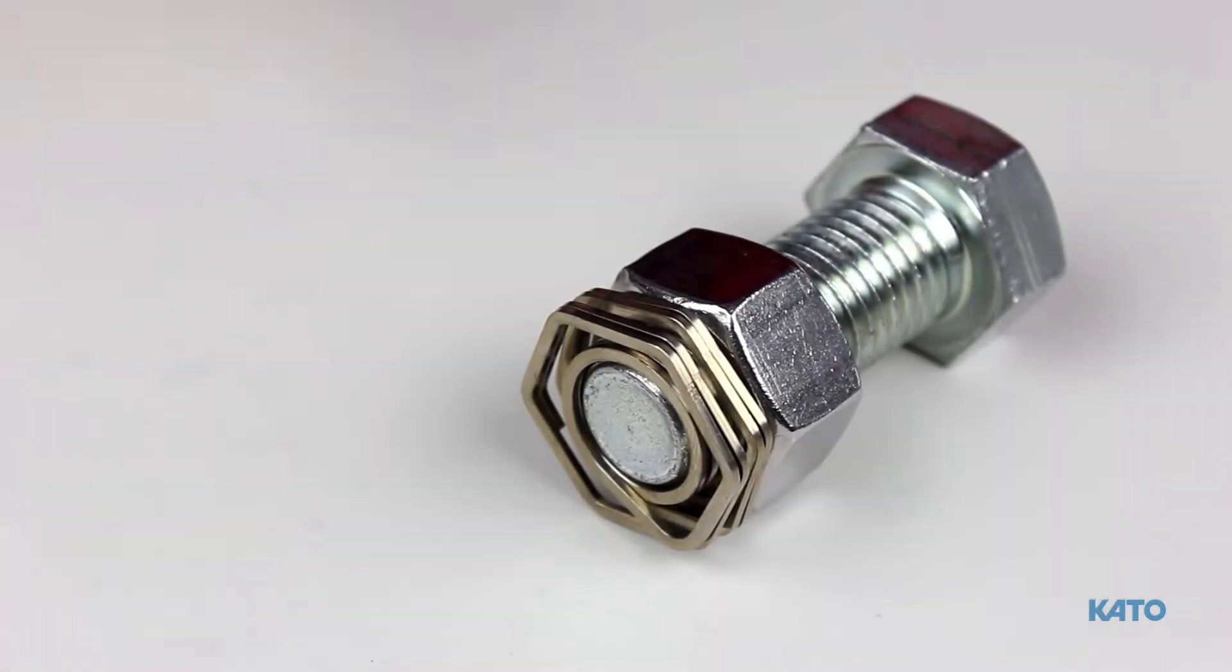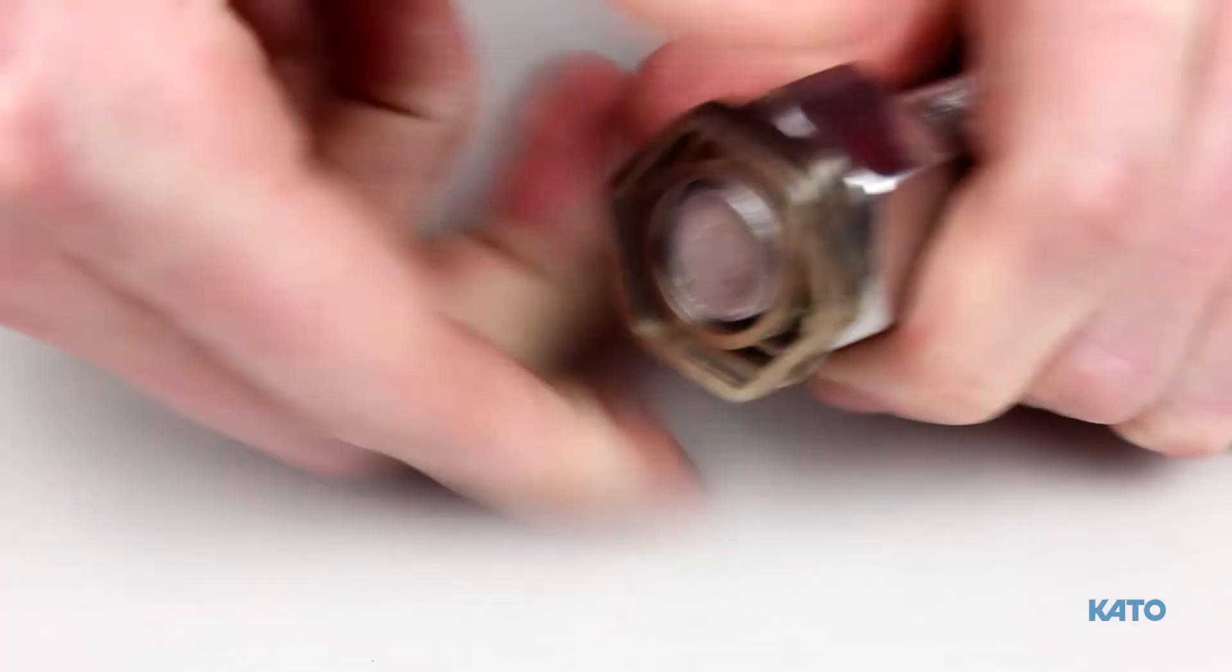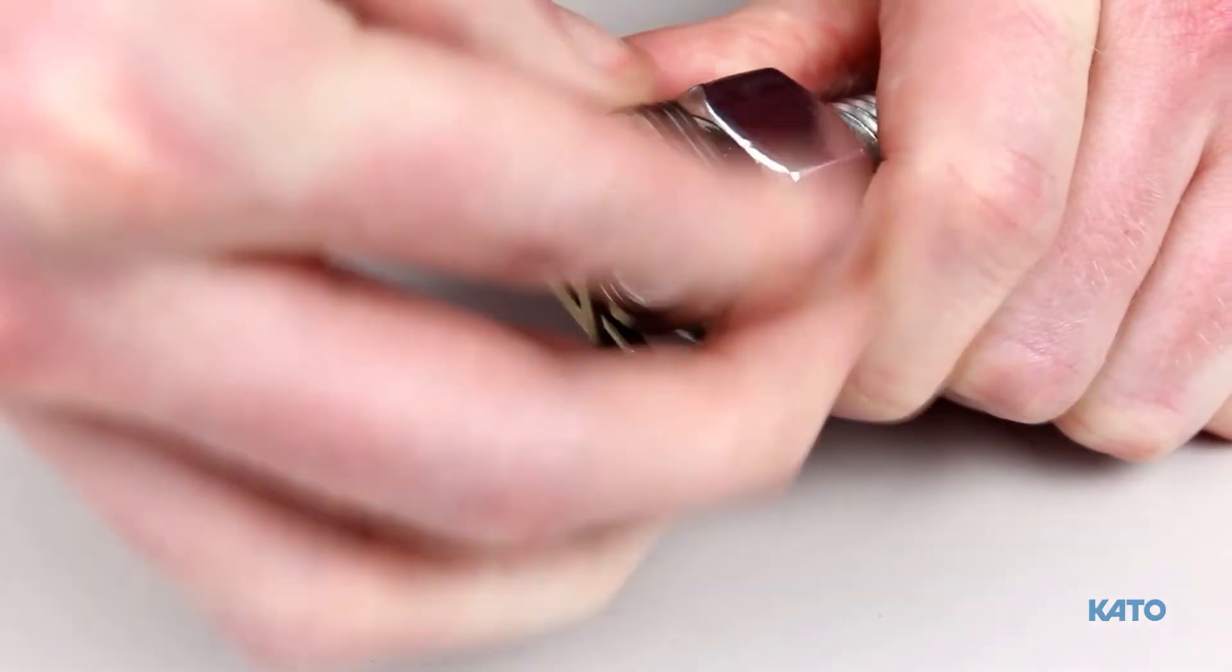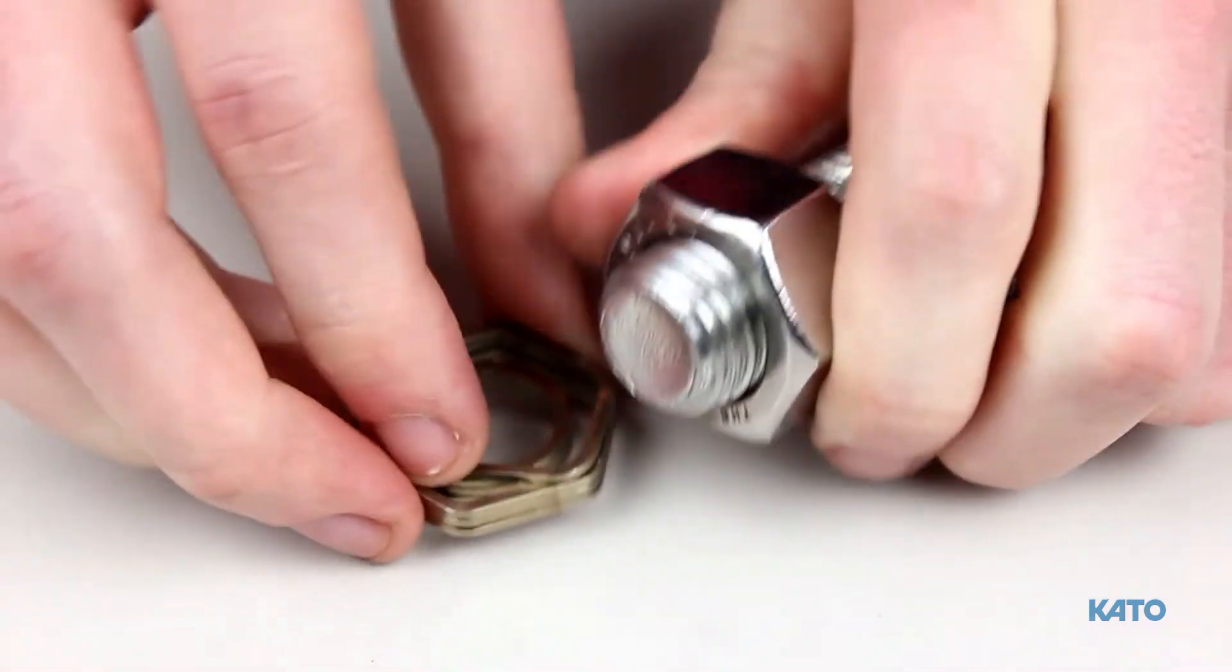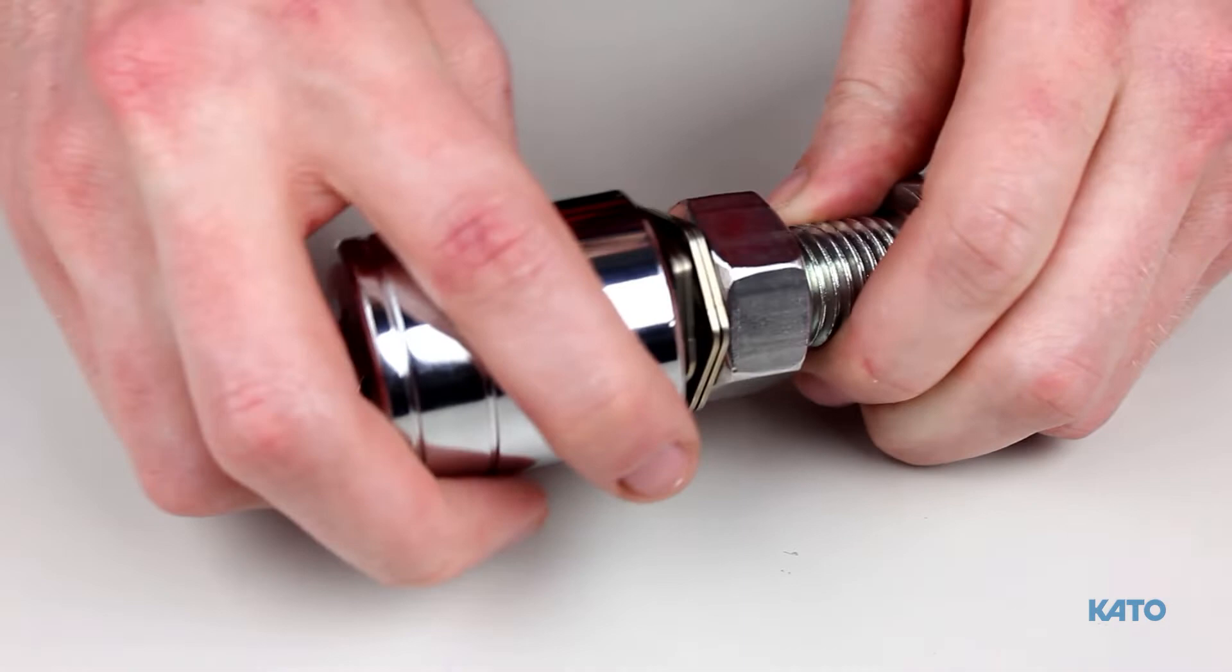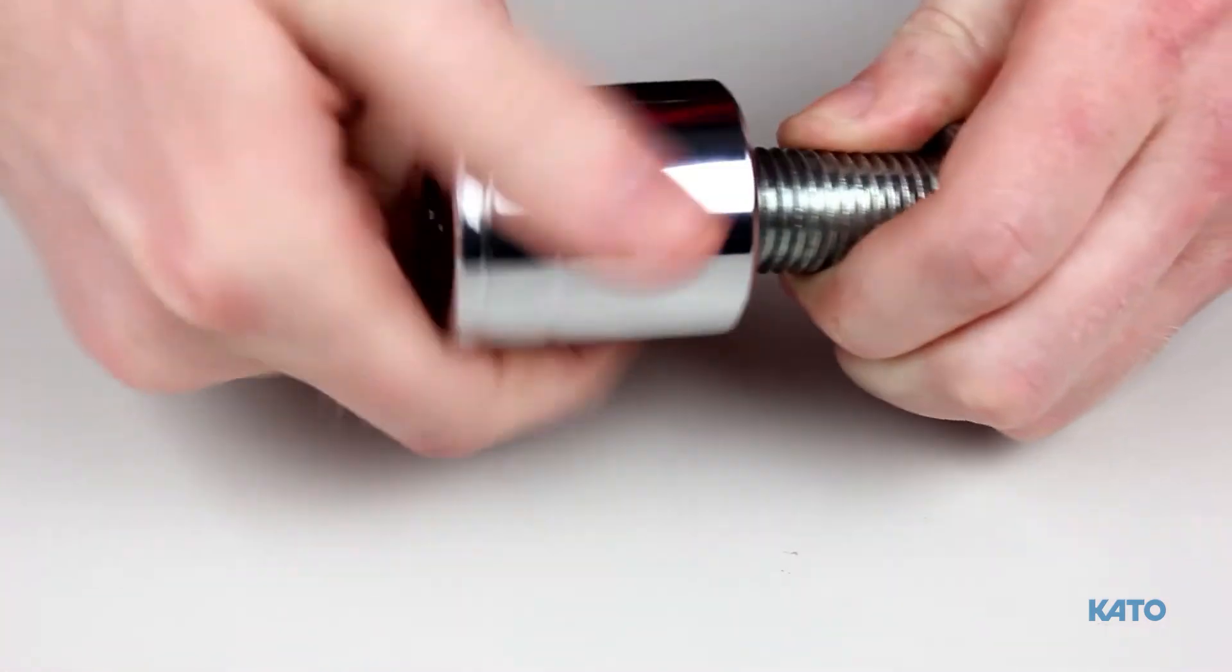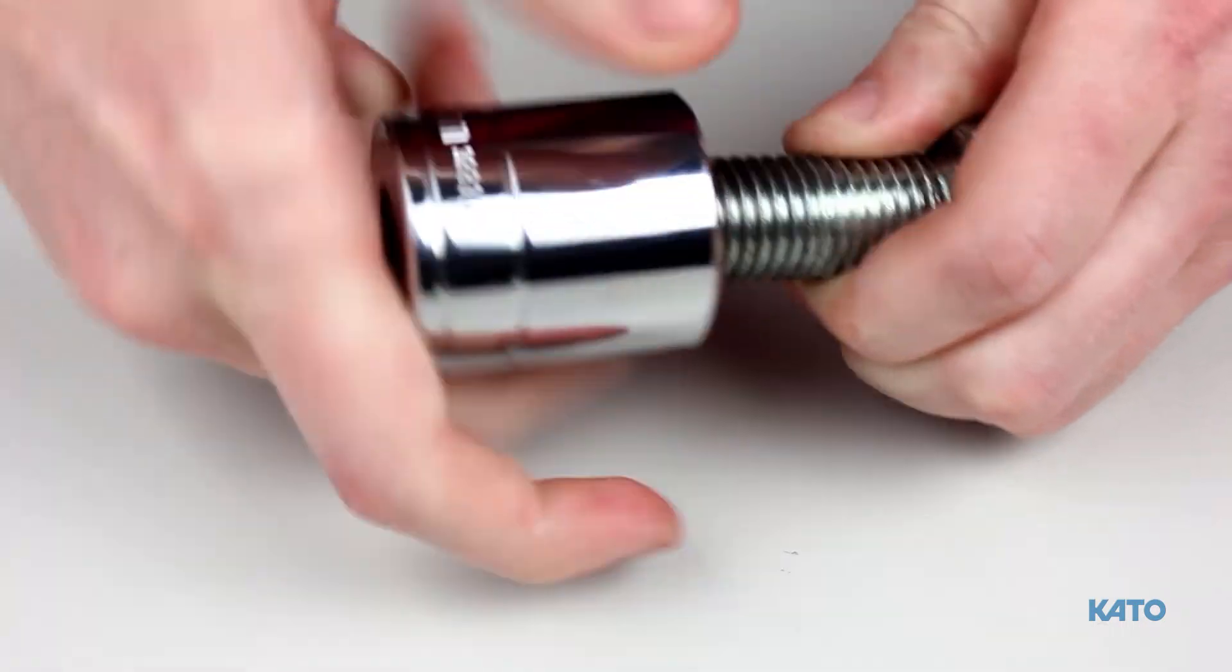To remove Lock One manually, grab both sets of coils and thread Lock One off the bolt. Or you can simply slide a 12 point socket over Lock One and thread it off the assembly with or without the nut.